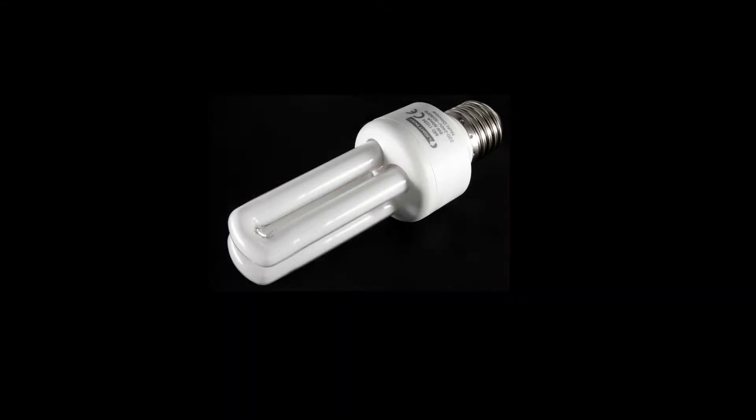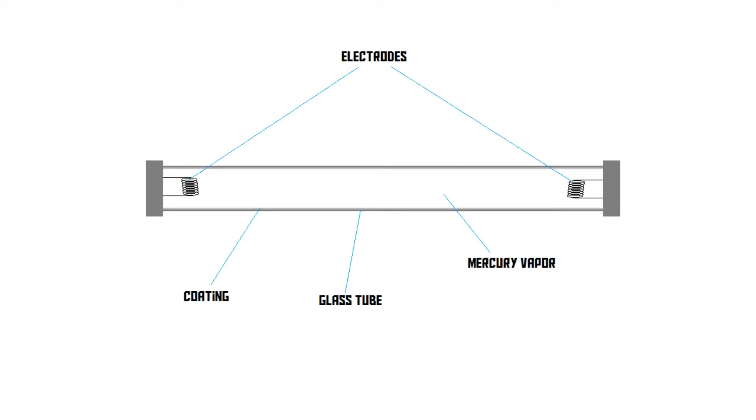Fluorescent lights come in many different shapes and sizes, but for now let's just take the most basic design. It consists of a glass tube. On both sides of the tube there's an electrode.